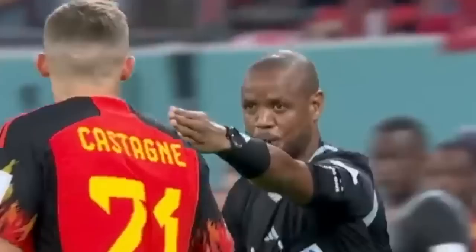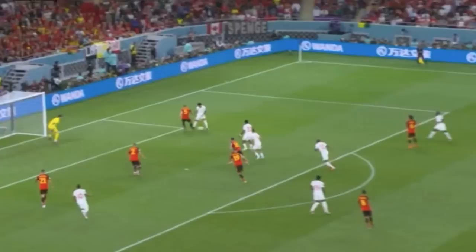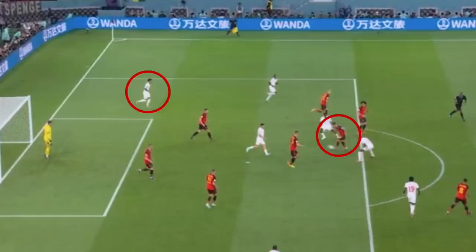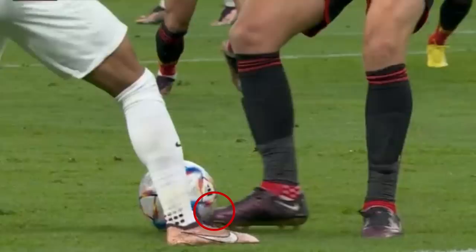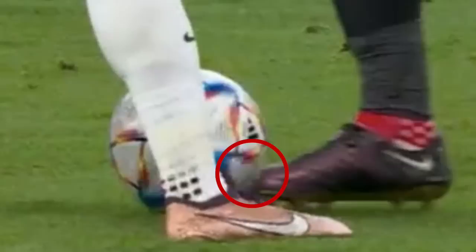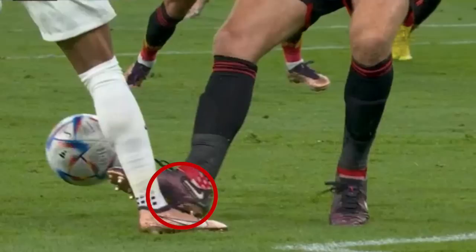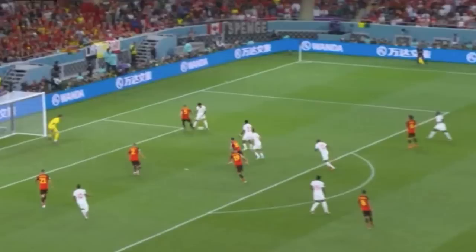Buchanan was also involved in the next incident, where he was possibly fouled by Vertonghen, but the AR incorrectly signalled for offside. You can see that Hazard clearly passes the ball to Buchanan, so the offside call is completely wrong, as the laws of the game confirm. VAR then had to look at the potential foul by Vertonghen, but they determined it didn't need a review — we can only assume this is because of the slight touch on the ball that Vertonghen got before making contact with Buchanan. This is a 50-50 decision that could have gone either way, so we'll put this as another question mark.